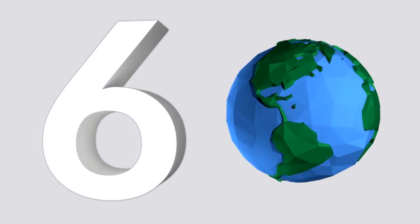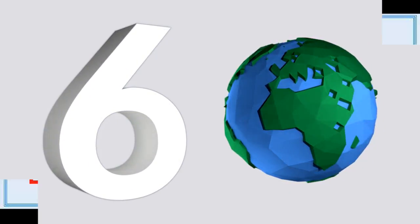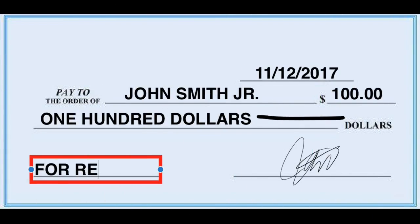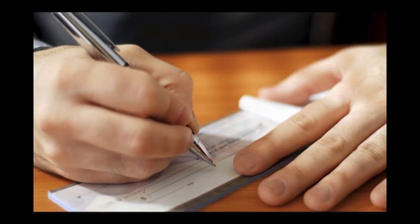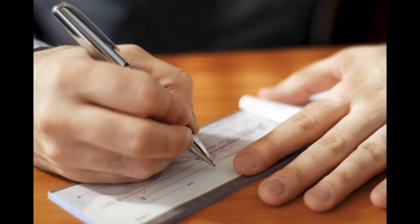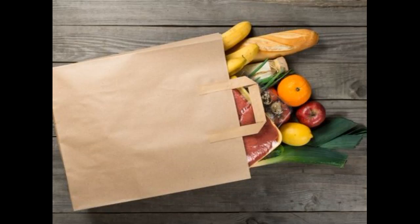Step number six, fill out the memo section. This part can be optional but filling it out will help the recipient sort out the check that he or she receives. For example, you can write whether the check is issued to pay for your rent or for purchasing other goods and services.